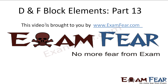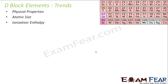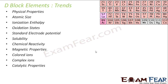Hello friends, this video on d and f block elements part 13 is brought to you by examfea.com. We'll see the trends on the d-block: physical property trends, atomic size trends, ionization enthalpy trends, oxidation state variations, standard electrode potentials, solubility, chemical reactivity, magnetic properties, colored ions, complex ions, catalytic properties, interstitial compounds, and alloy formation.